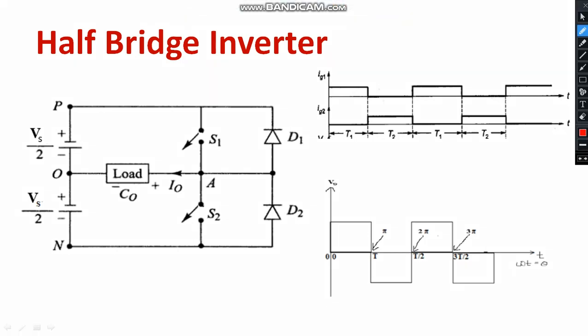If we directly provide the square output to a particular load, the load will not operate properly due to a lot of distortions, called harmonics. To avoid this, we need to extract the fundamental component from the square output using the Fourier series. The expected output is extracting the fundamental component V01.